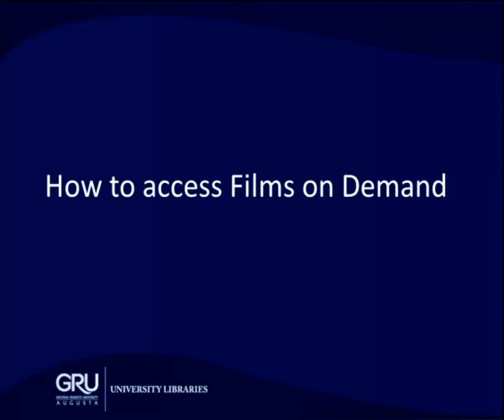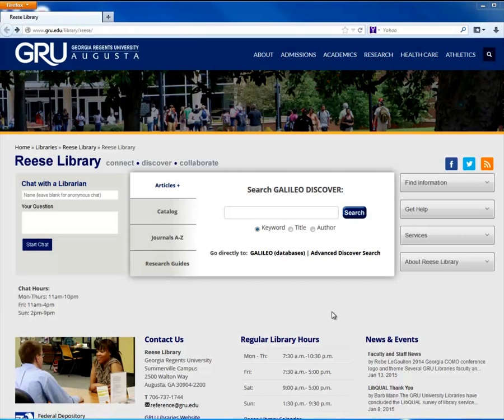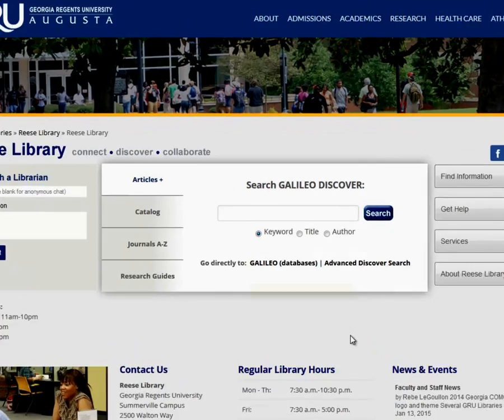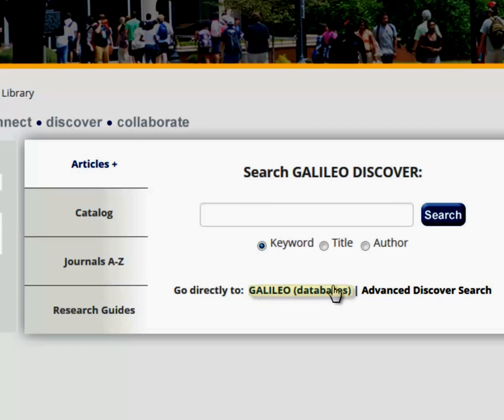This tutorial will show you how to access Films on Demand. From the Reese Library homepage, click on the Galileo Databases link.